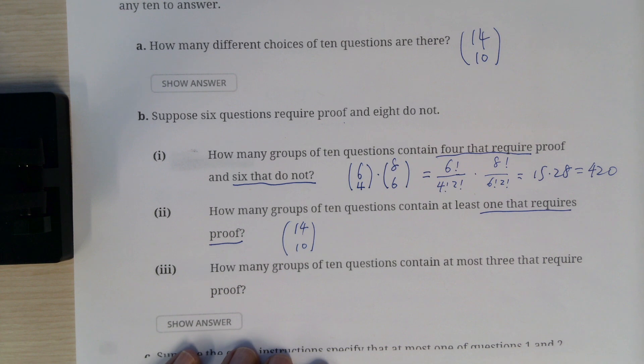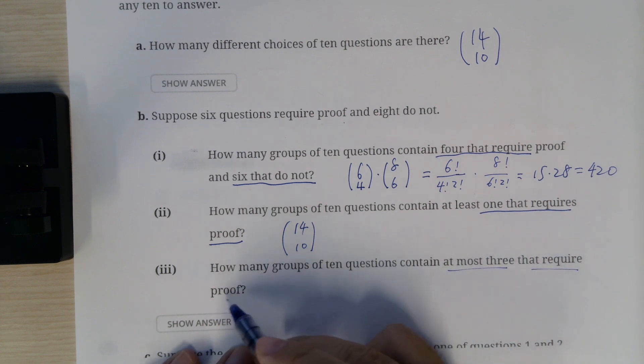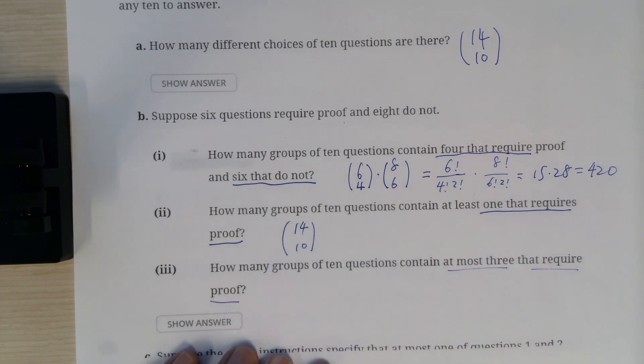So number three. How many groups contain at most three that require proof? At most three.